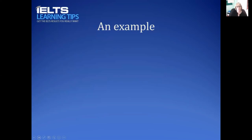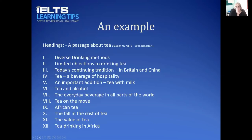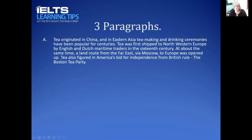So here's an example of a headings exercise. It's a passage about tea and you can see it's from a book called 'A Book for IELTS.' There are 12 headings here, which is quite a lot, but there are usually quite a lot of headings to consider. You can see just by skimming through them they're all to do with tea. I've picked out three paragraphs to look at and I want to look at each in turn to see if we can get an overview of what they're about.